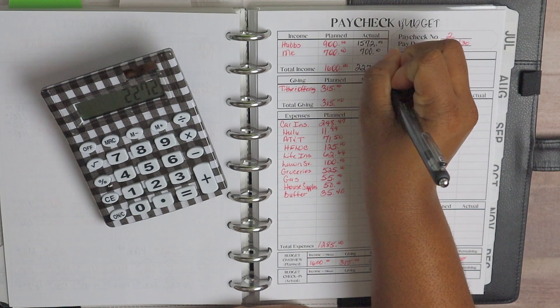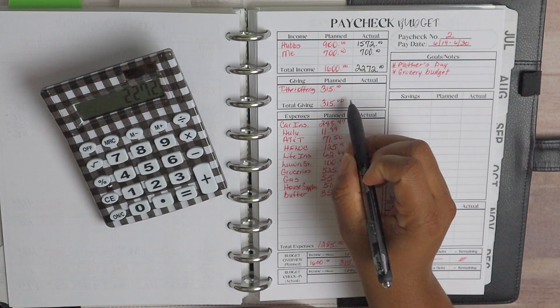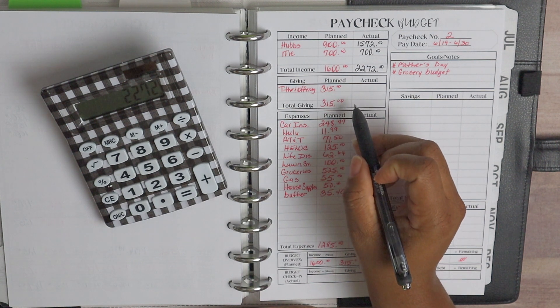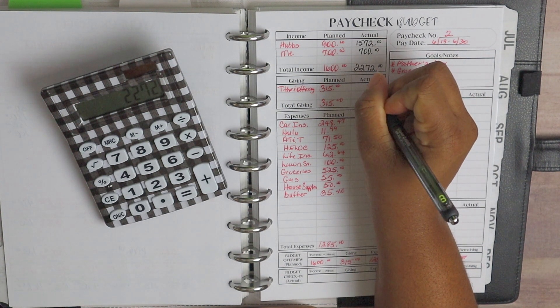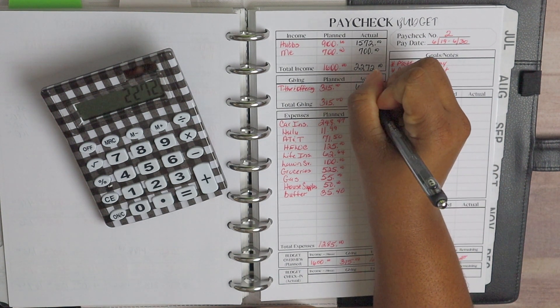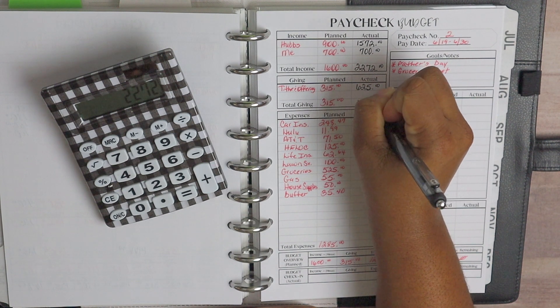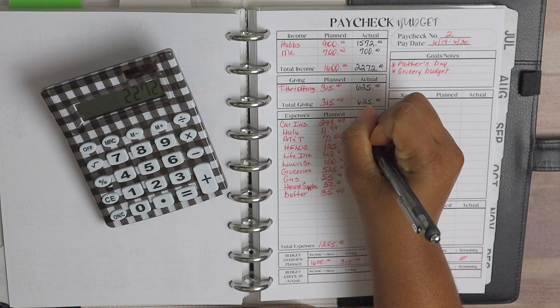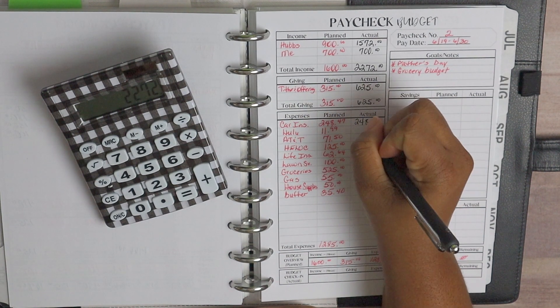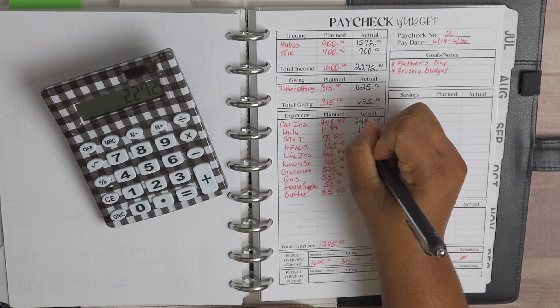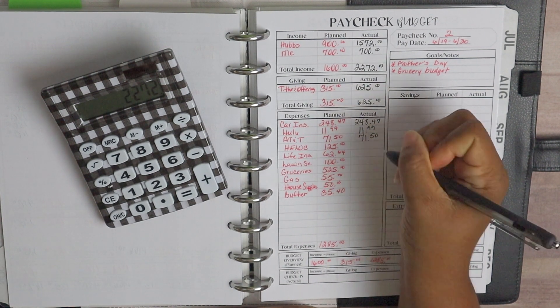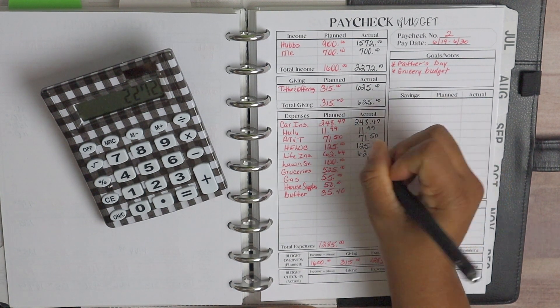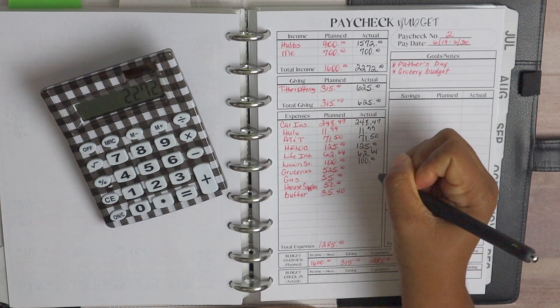And of course the tithing offering went up because we do tithe off of our gross income and with hubs getting overtime, that made this come in at $625, which is awesome. And then for our car insurance, of course that was paid. The Hulu, that was taken care of. Our cell phones, this is for two lines. Our HELOC, our life insurance, and our lawn service.